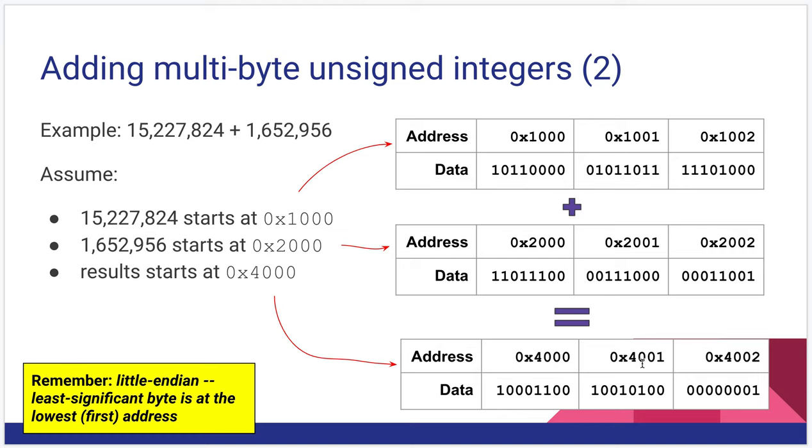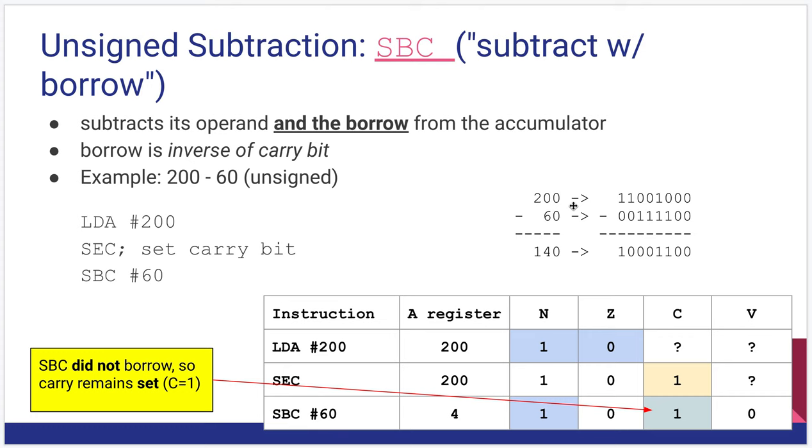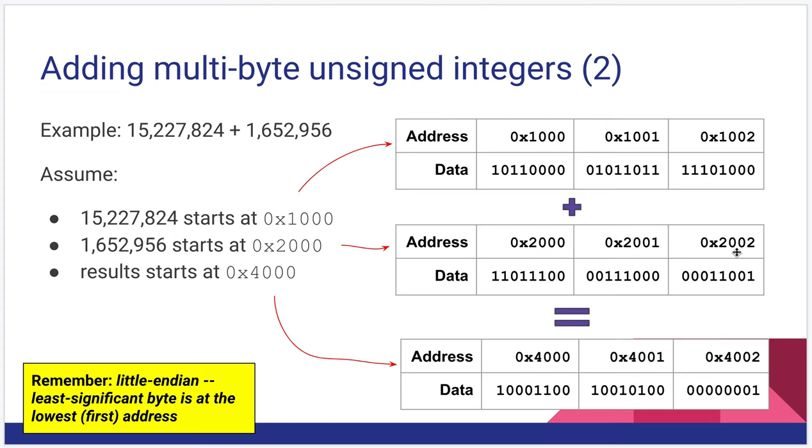We add those together starting with the low byte and we're going to store the result at low byte $4000, middle byte $4001, high byte $4002. So add what's at $1000 to $2000 and store it at $4000. Add what's at $1001, add it to what's at $2001, store it to $4001. Take what's at $1002, add it to $2002 and store it at $4002. The key is we're preserving the carry bits from each one so that they affect the next byte in the series.